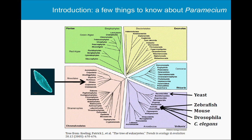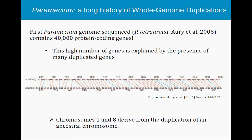Ciliates are capable of amazing things. If you're not familiar with ciliates and you want to see something absolutely amazing, I strongly recommend looking at genome organization and programmed DNA elimination — it's something you find nowhere else in eukaryotes at this scale. The first paramecium genome was sequenced and published in 2006, and the big surprise was the total number of genes: 40,000 protein-coding genes, roughly twice as many as we have in the human genome.